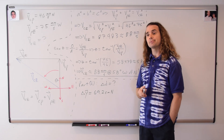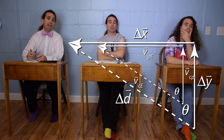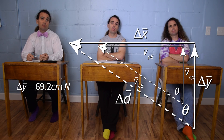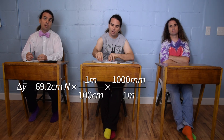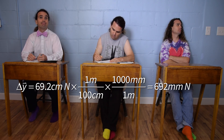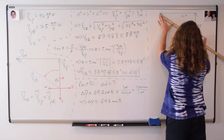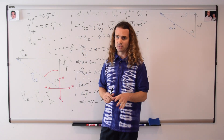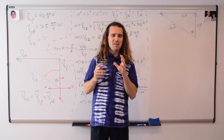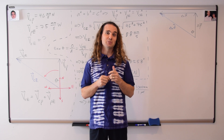Bo, could you please find the displacement along the hypotenuse? We need to draw a new triangle with the displacements — it'll be a similar triangle to the first one we drew. And we need to convert the displacement in the y direction to millimeters, so the dimensions are the same. Multiplying by 1,000 millimeters over 1 meter, we get 692 millimeters north. Please, never try to put different dimensions on the same triangle of vectors. Make sure the dimensions are the same so they all work together.